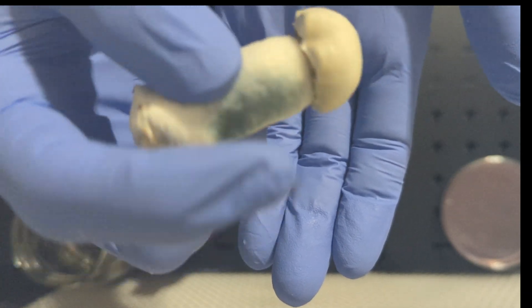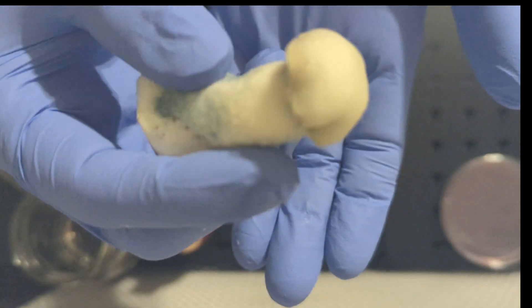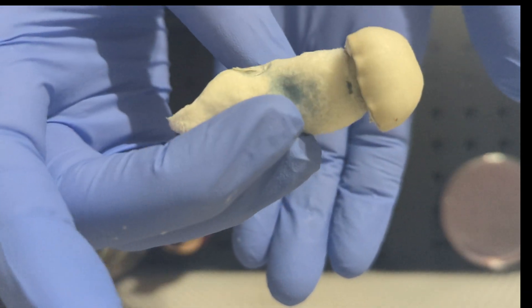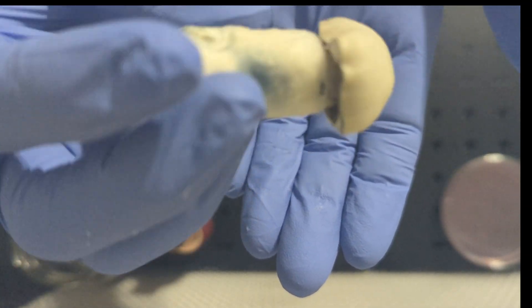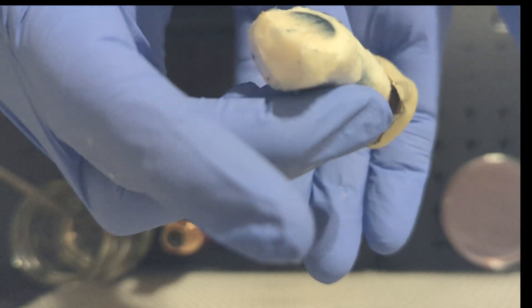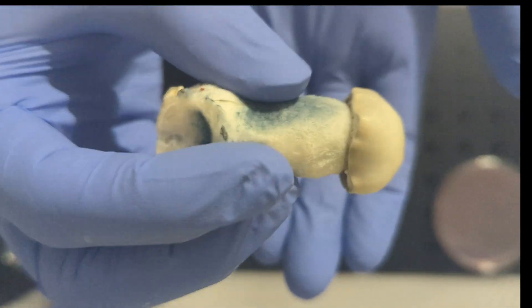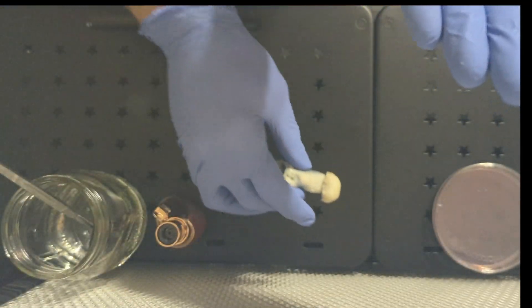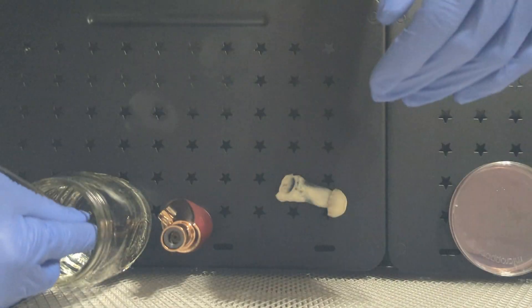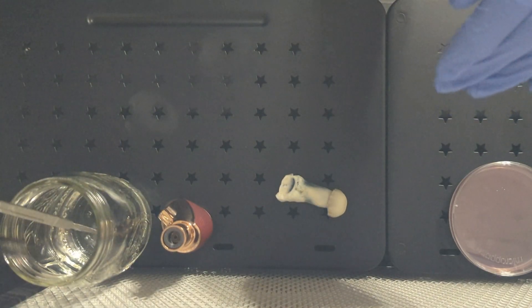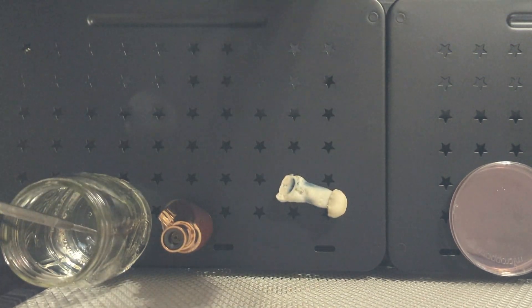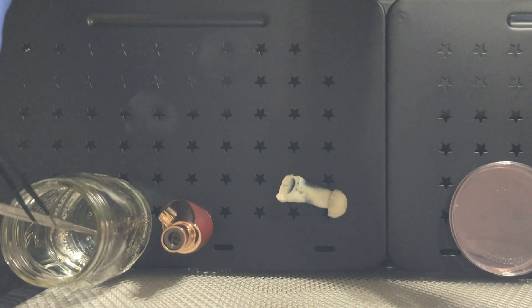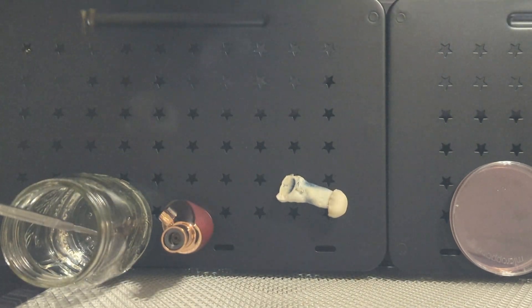When I harvest the mushroom, if there's any substrate still on the base of it, I'll usually cut it off with a clean pair of scissors. You could use a clean scalpel as well, or just rip it off. The only purpose of this is just to keep from getting substrate all over your workstation. You want to try and avoid getting substrate in the cloning tissue sample or in the agar dish as it's probably contaminated.